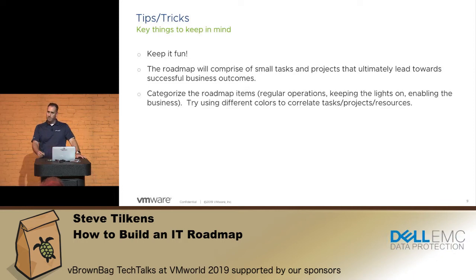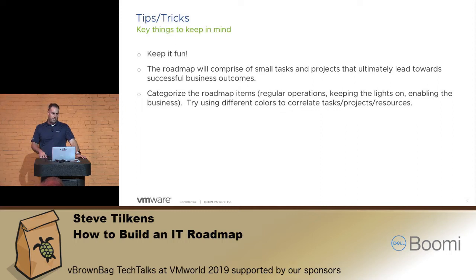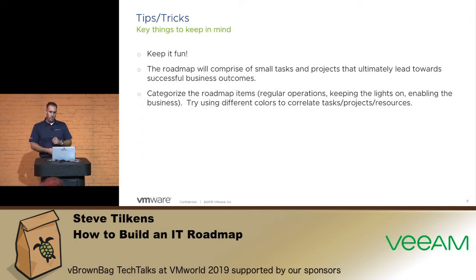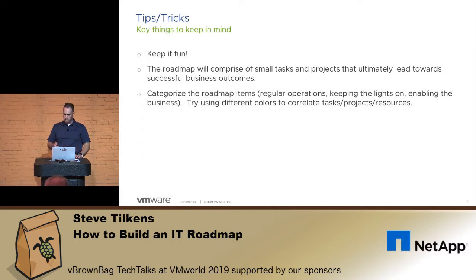You're going to want to categorize the roadmap — that's where the different colored sticky notes come into play. I typically like to do it by team if it's a relatively small IT shop: infrastructure team, database team, storage, VDI, desktop. That way the items on the roadmap correspond to who's going to be doing the work. You can also categorize by related projects, or use one color for ongoing maintenance tasks that you do regularly.